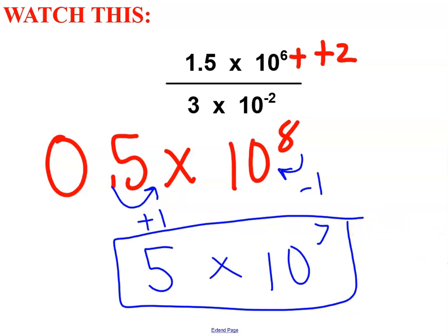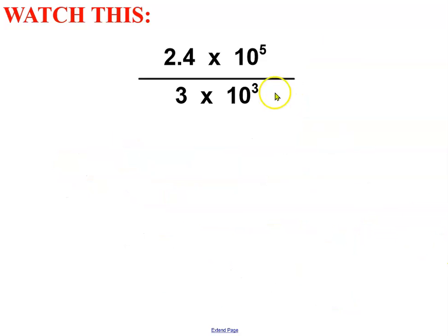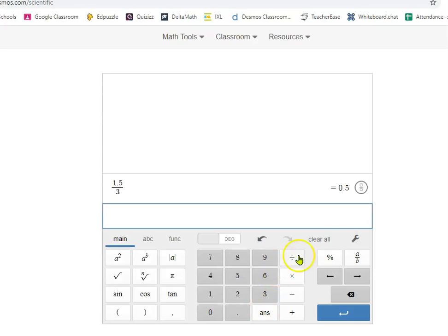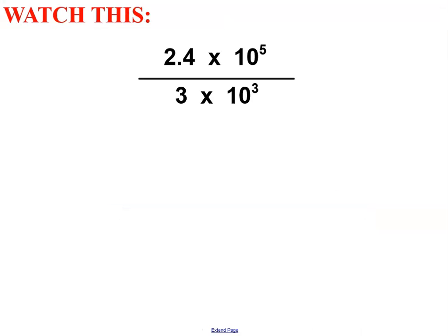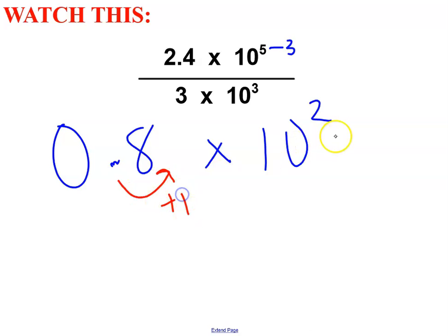Let's do that again. 2.4 divided by 3. Use your calculator. 2.4 divided by 3. The answer is 0.8. 0.8 is my coefficient. And 5 take away 3 is my exponent. Move the decimal one place higher. Move the exponent one place lower. 8 times 10 to the 1st. You can even leave that one invisible.